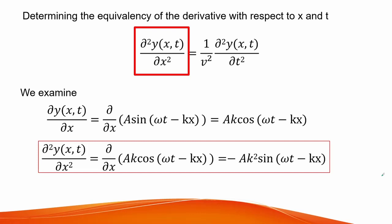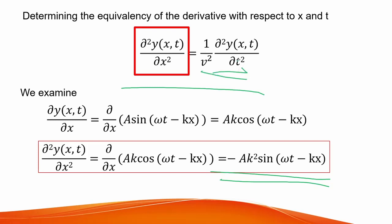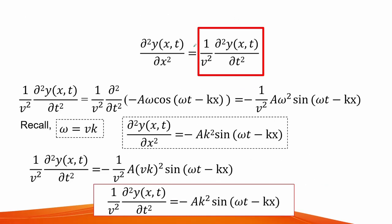Here we determine the equivalency of derivatives with respect to the second derivative of the wave function with respect to displacement x and time t. We take the second derivative with respect to x and get a function of negative displacement times the square of the wave number times sine of (angular frequency times t minus wave number times x). We then verify the same with the partial derivative with respect to time t. We have shown that both equations are indeed the same.